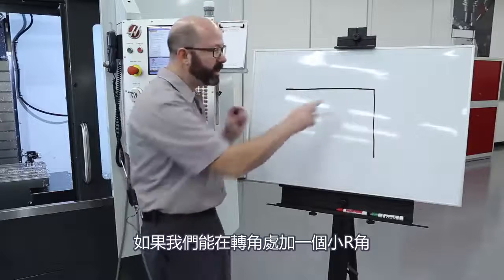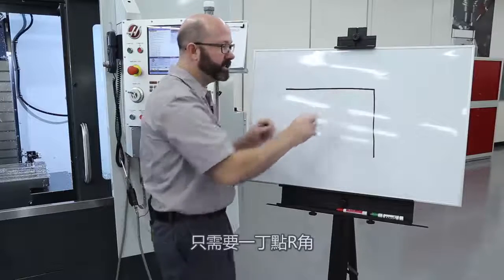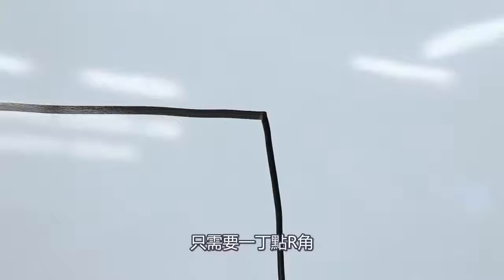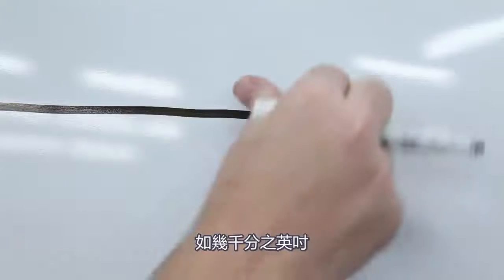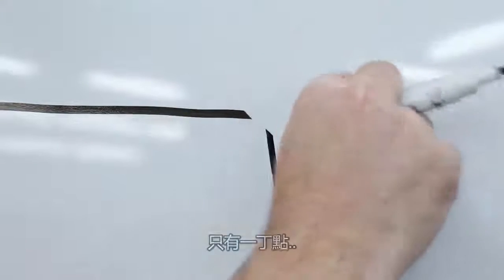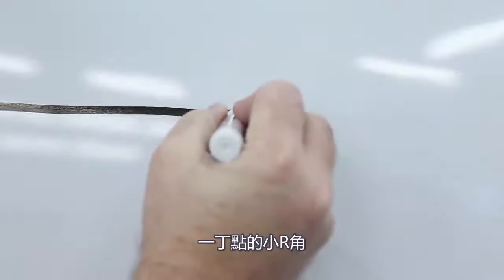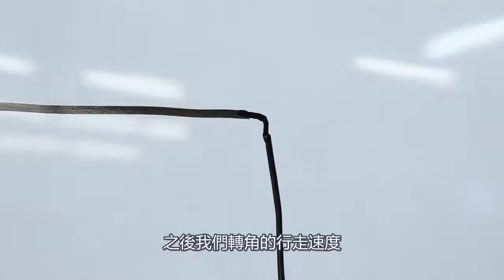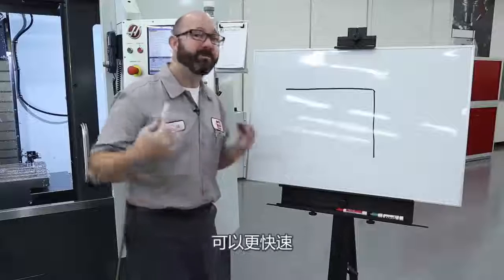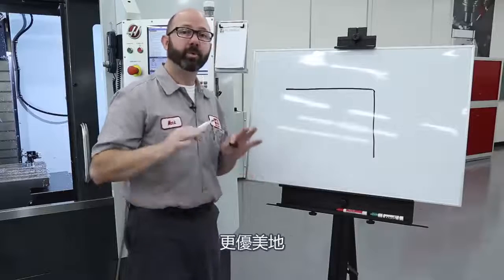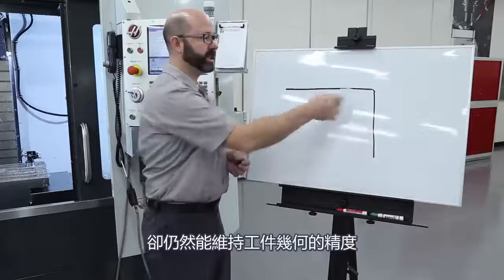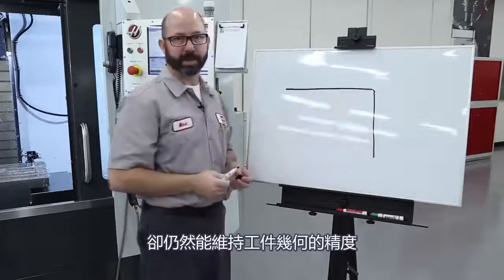Now if we can round that corner just a little bit — just a tiny radius of a few thousandths of an inch — then we can navigate that corner faster and gracefully while still holding accuracy on our part geometry.